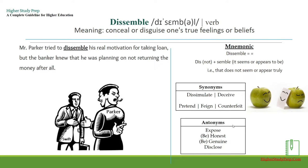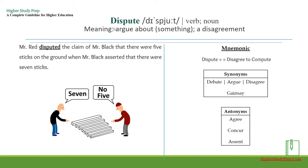Antonyms for 'dissemble' include: expose, be honest, be genuine, or disclose. Next, 'dispute' can be used as either a verb, meaning to argue about something, or as a noun, meaning a disagreement. Example: Mr. Red disputed the claim of Mr. Black that there were five sticks on the ground, when Mr. Black asserted there were seven.